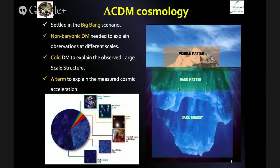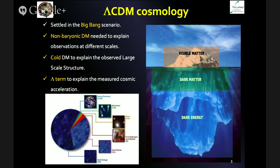This is a reminder about the beautiful cosmological framework we call Lambda CDM, which in principle gives us a good explanation for all this observational evidence. We settle in this big bang scenario; we need this non-baryonic form of dark matter mainly to explain observations at different scales in a consistent way. It must be cold, because we need dark matter particles to move at non-relativistic velocities in order to explain the large-scale structure observed in today's universe and to understand how objects form and evolve. And of course you have the lambda term — this enigmatic energy — that explains the measured cosmic acceleration. The framework is not perfect, but it is the best tool we have to explain observations at different scales.